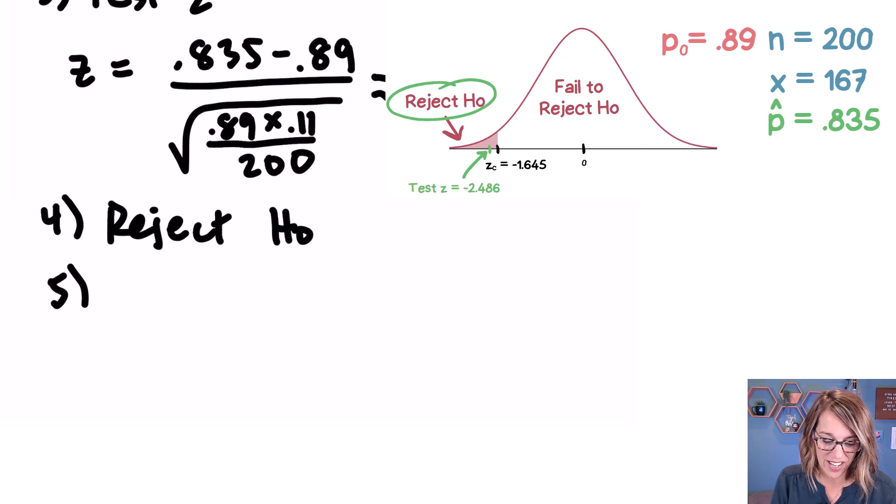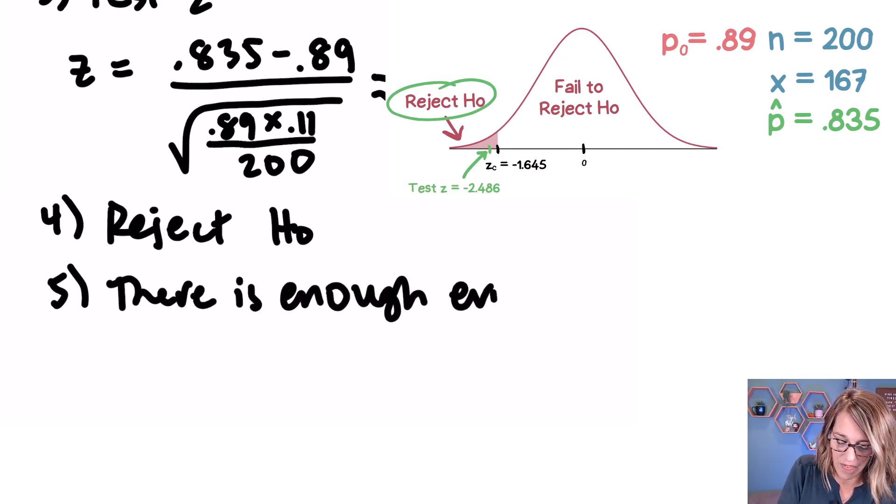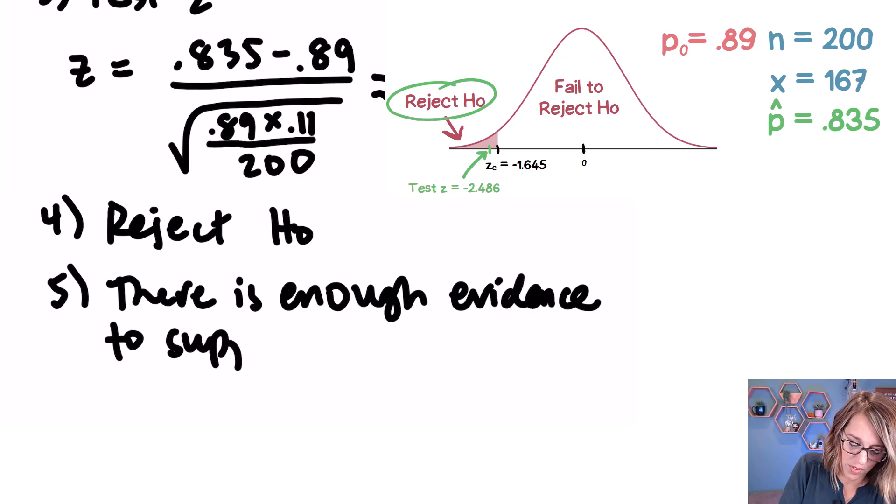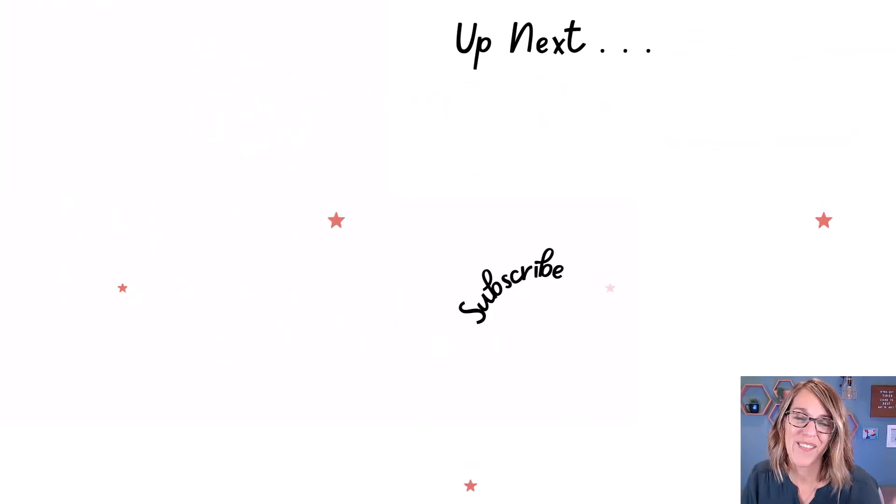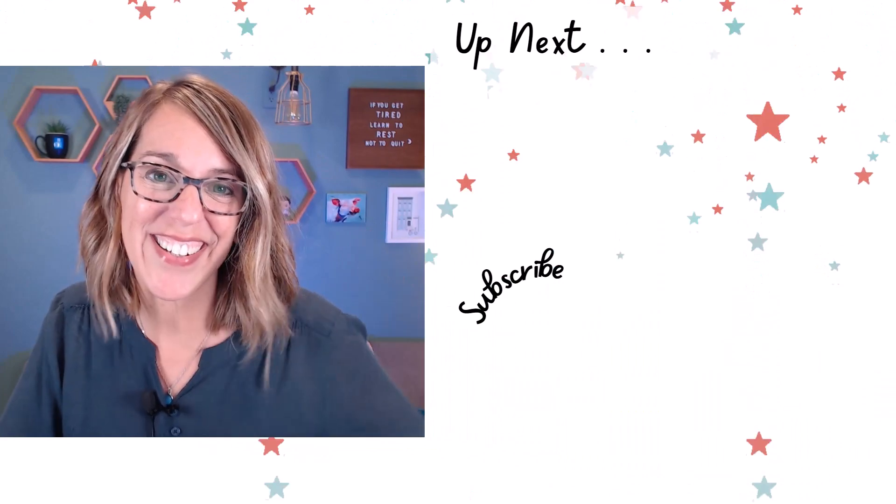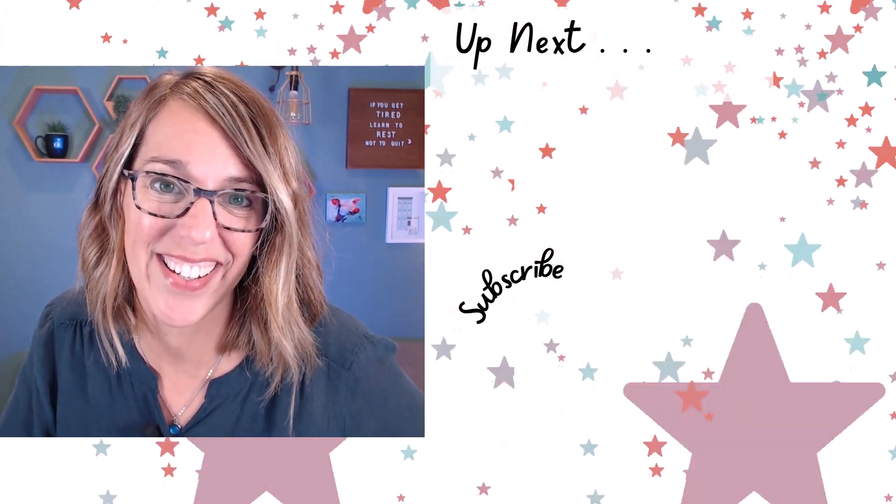So step number five, what does this mean about the principal's claim? Did we find that our percentage is significantly lower than that 89%? Because we landed in that rejection region, we definitely did. So we can say that there is enough evidence to support her claim. I've got another video for you here. You've got this. Let's take it. Thank you.